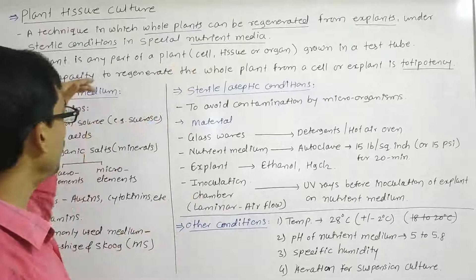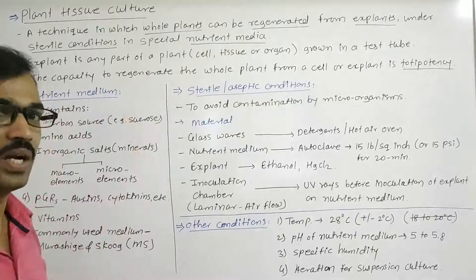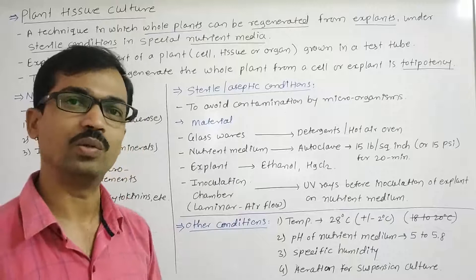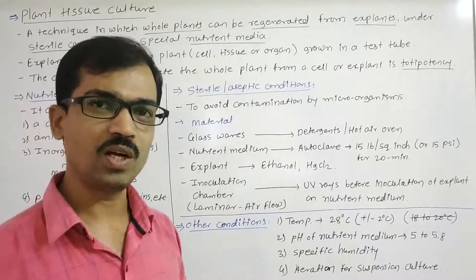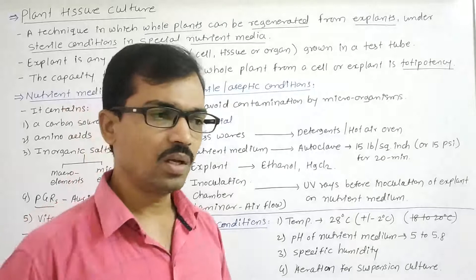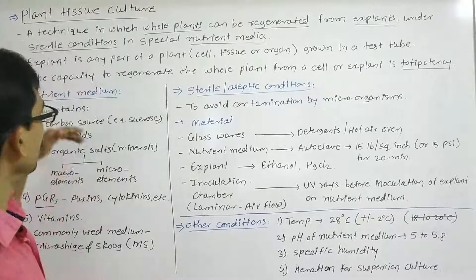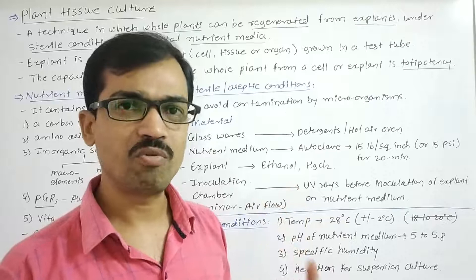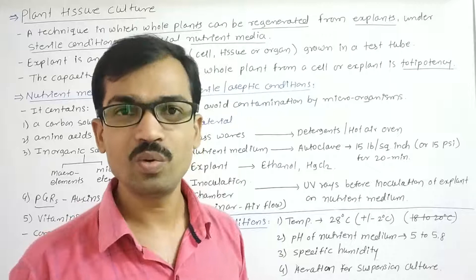Now we will discuss what nutrient media is and its components. Just as humans need to eat food every day and utilize nutrients for cells to grow, divide, and differentiate, plants also require nutrients. Plants in the field absorb mineral nutrients from soil and synthesize carbohydrates through photosynthesis. They also produce vitamins and phytohormones.